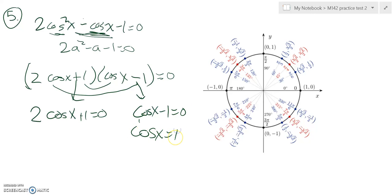So this would imply that cosine of X equals one. And that all happens in one place, that only happens here at zero.